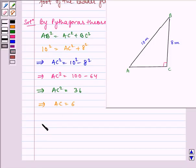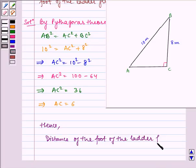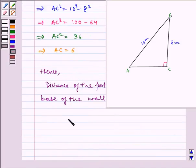Hence, the distance of the foot of the ladder from the base of the wall is 6 meter.